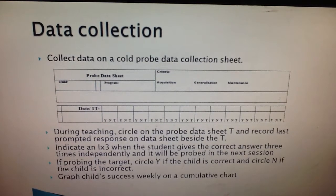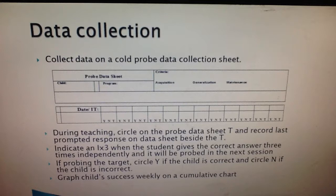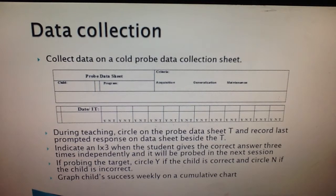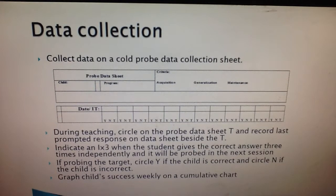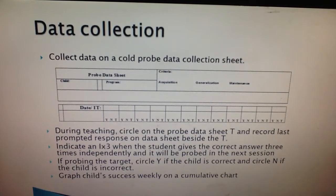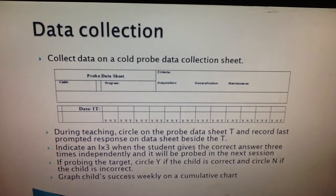For data collection, collect data on a cold probe data collection sheet during each teaching cycle. Indicate an item as 'T' when the student gives the correct answer three times independently, or record the last prompted response beside 'T'. If the target has been taught to three independent responses, it will be probed in the next session. Circle 'Y' if the child is correct and circle 'N' if the child is incorrect.